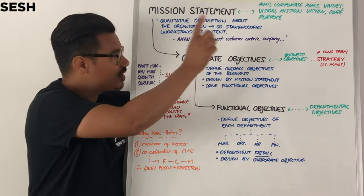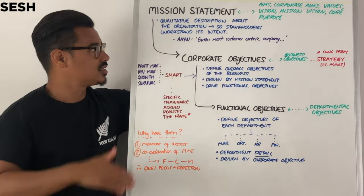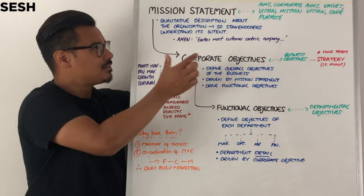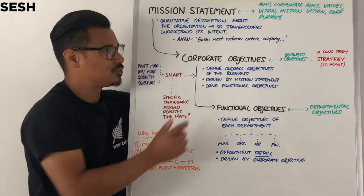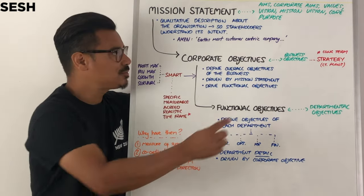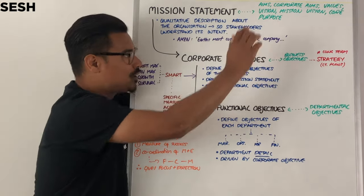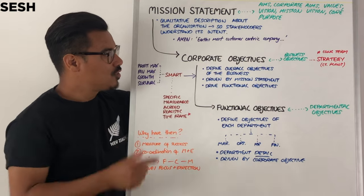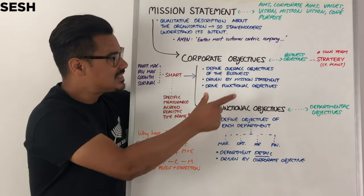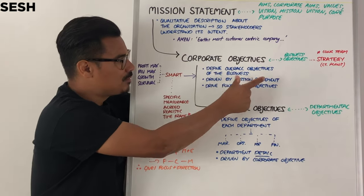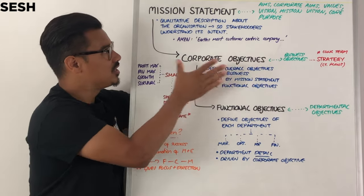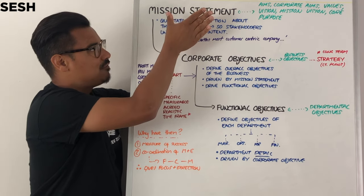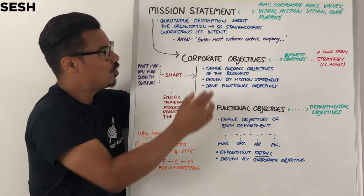In the case of Amazon: Earth's most customer-centric company. Now, the layer below mission statements is corporate objectives — sometimes interchangeably called business objectives. Corporate objectives are driven by the mission statement, so they are there to support that big, top-level mission statement, which is often very broad and qualitative.